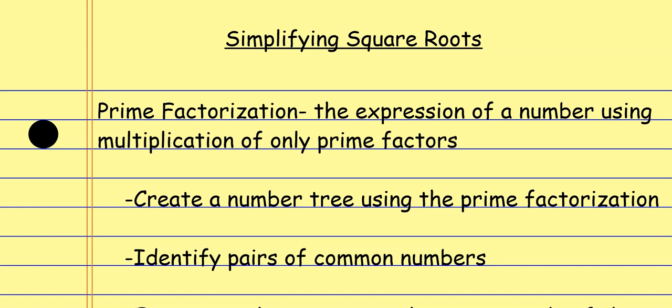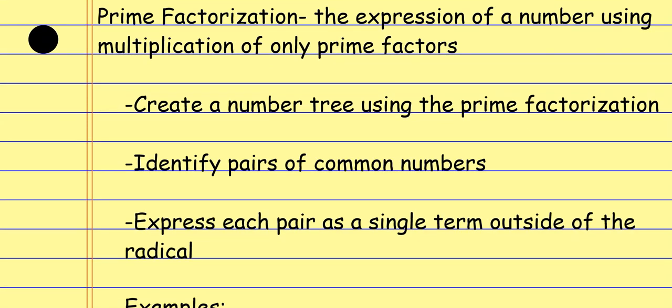Then we're going to identify pairs of common numbers and write those pairs on the outside of the radical symbol. Anything that doesn't have a pair stays underneath the square root. The idea is that square roots and squaring things are opposites — they undo one another, just like addition and subtraction, or multiplication and division. So if I find a pair of threes, that's three squared, and the square and square root cancel, leaving just a three on the outside.